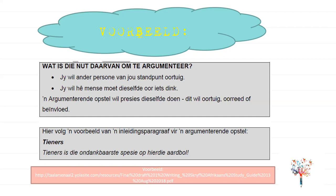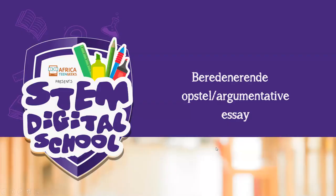Here is the example: the title is 'Teenagers.' The introduction paragraph is just one bold sentence — 'Tieners is die ondankbaarste spesie op die aarde' — teenagers are the most ungrateful species on earth. That is the entire introduction paragraph. From there, the body of the essay will unfold. Please take a picture.